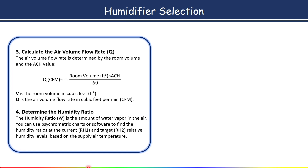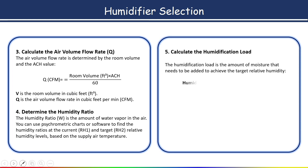Once you have all the details, the main target is to calculate the humidification load. The formula is: Q equals (W2 minus W1) multiplied by 4.5. Substitute the air volume flow rate, then W2 as the humidity ratio at the target relative humidity, and W1 as the humidity ratio at the current relative humidity.